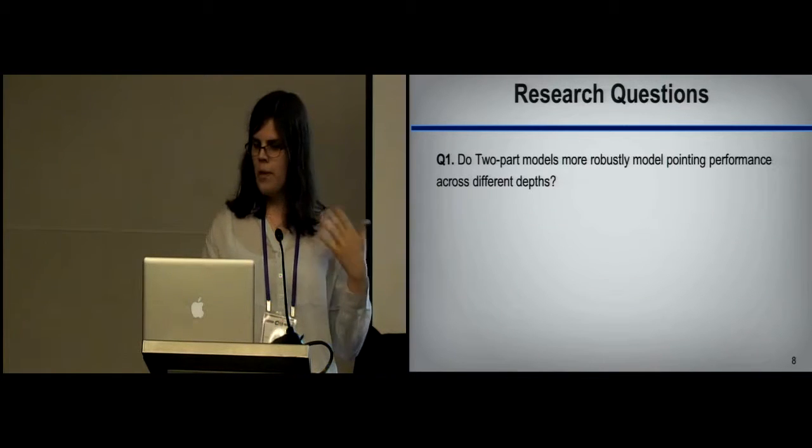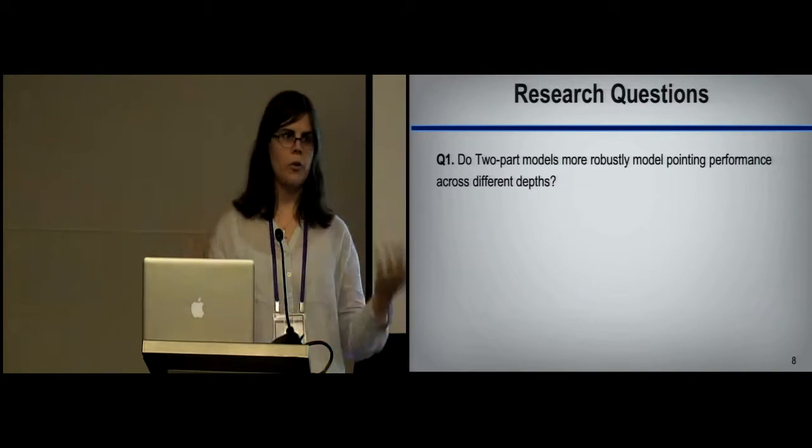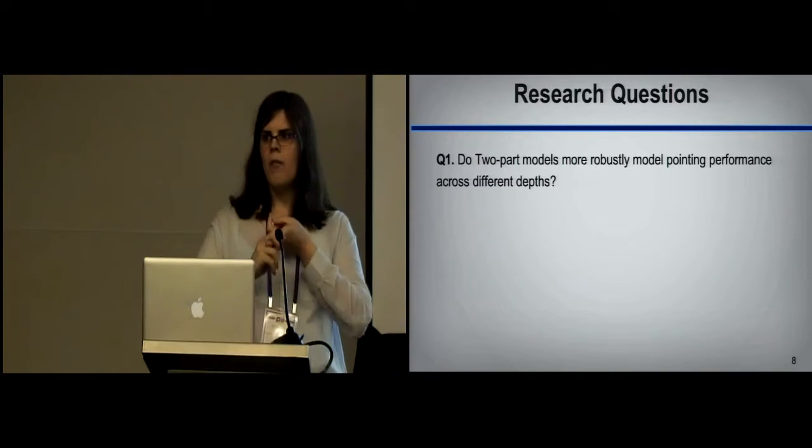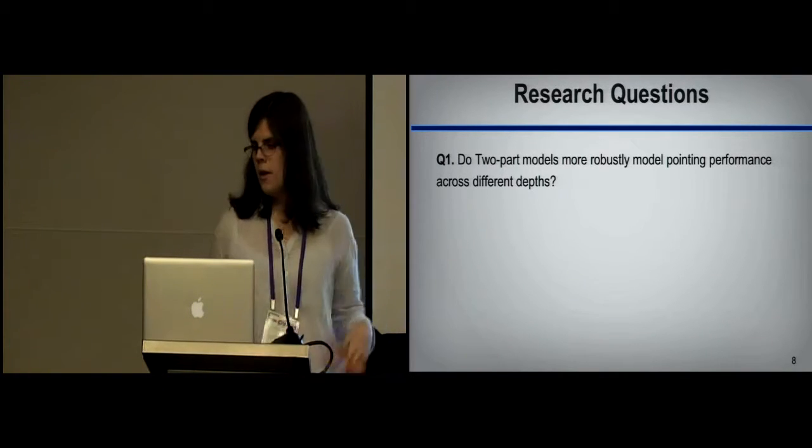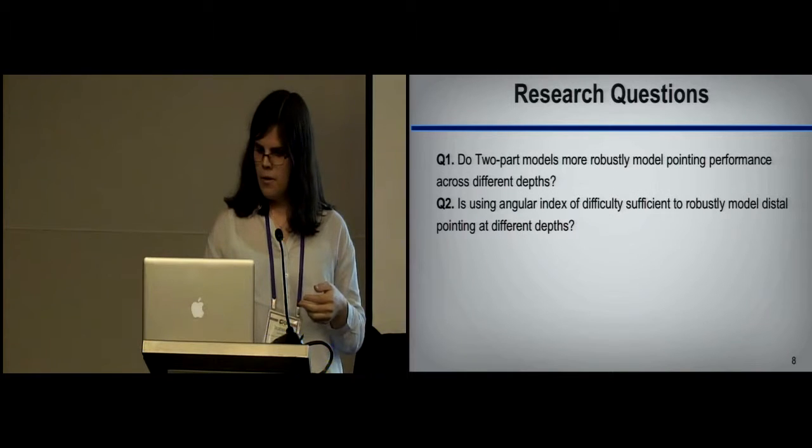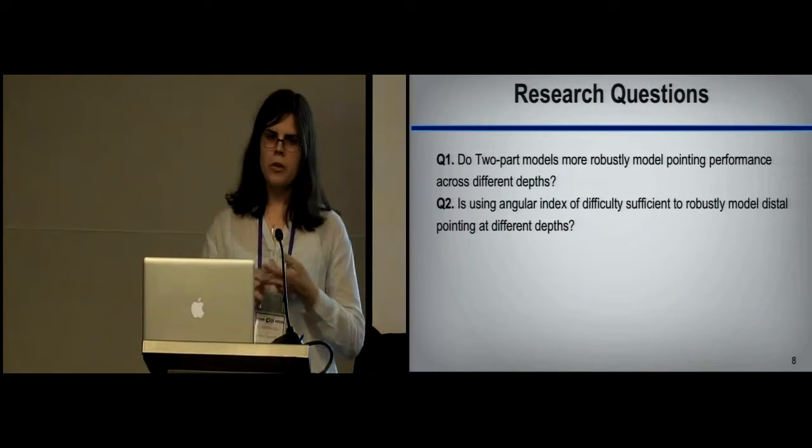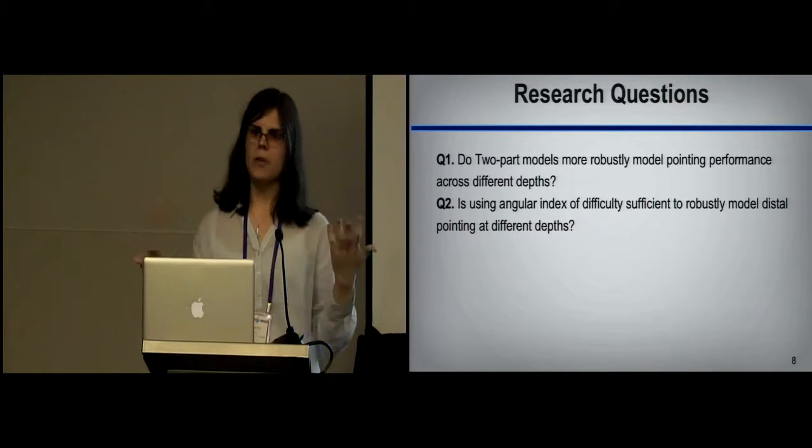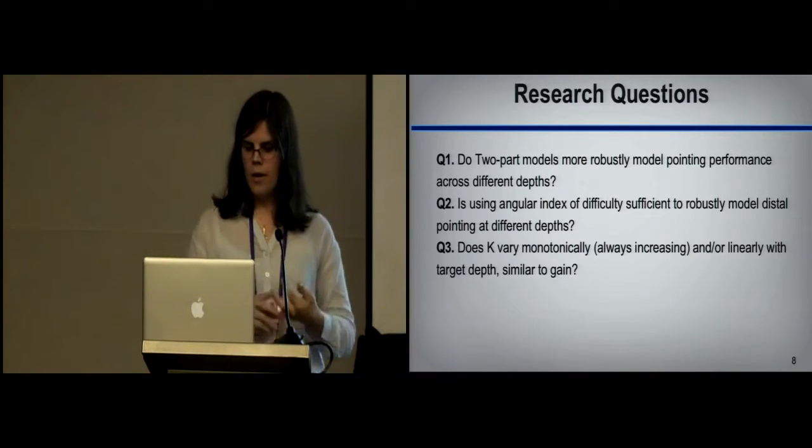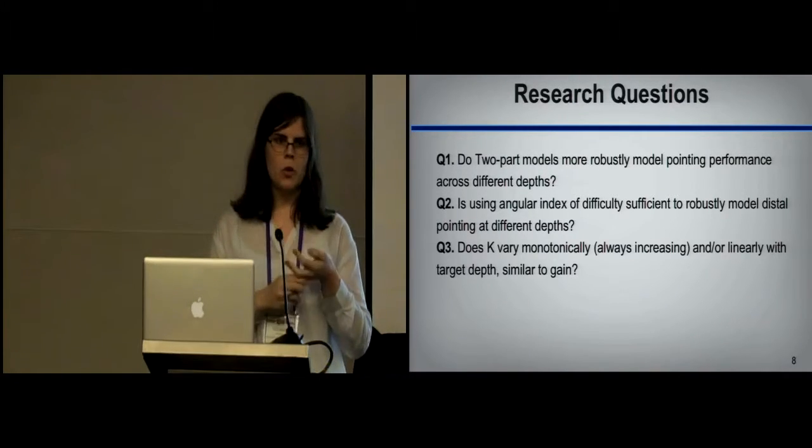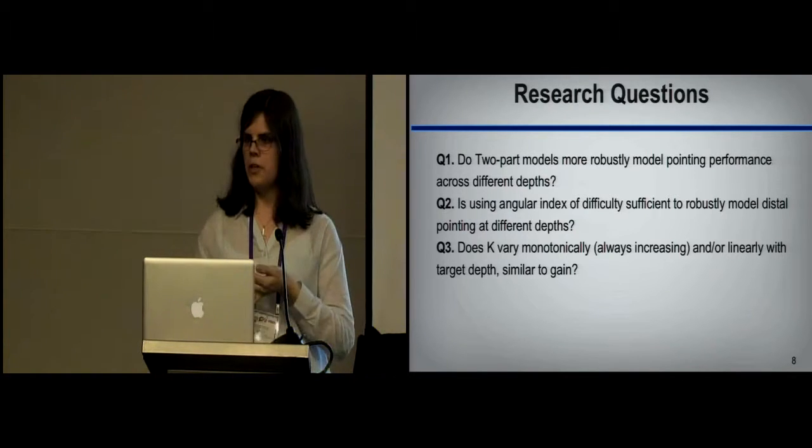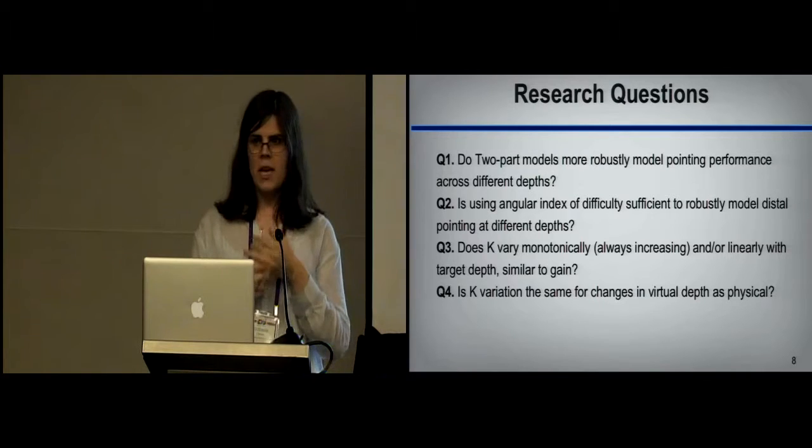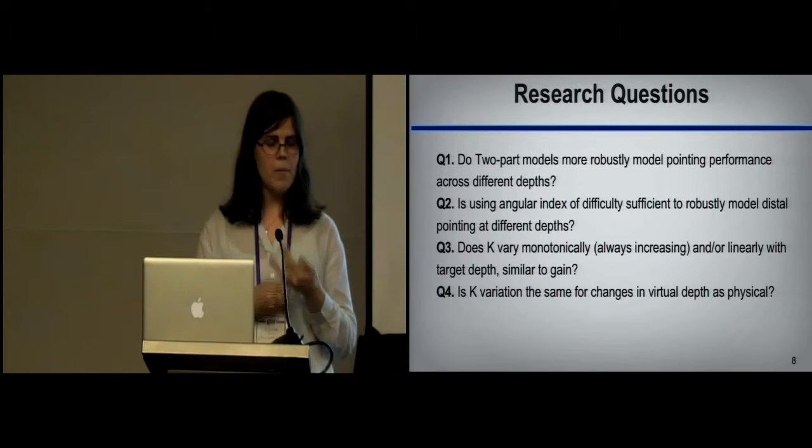So that's a lot of the background. The main research questions we had in our user study are as follows. Do two-part models of pointing performance more robustly model pointing? Is using angular index of difficulty sufficient for us to just keep using our standard simple one-part models that everybody seems to like a lot? Does K vary in a similar way to gain? Is it a monotonic linear relationship? And also, is this variation the same for changes in virtual depth as physical depth?